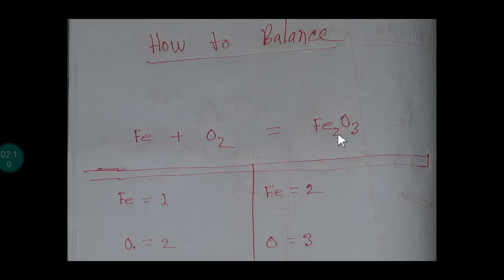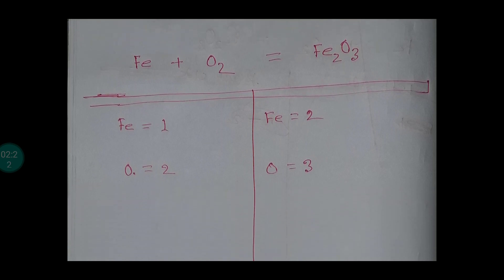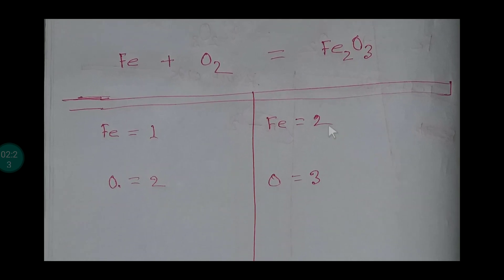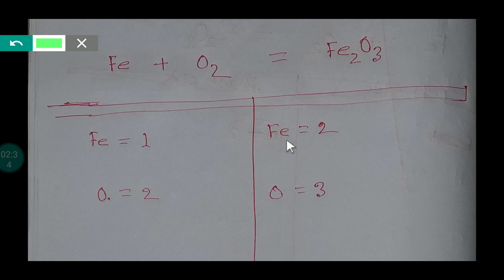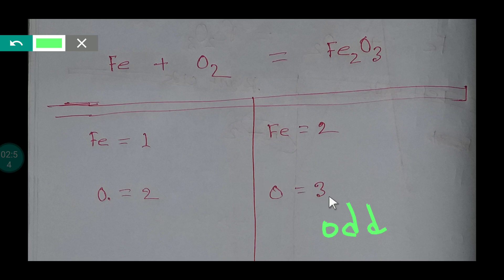Now our target is to balance this reaction: Fe + O₂ → Fe₂O₃. On the left side, the number of iron is 1 and on the right side it is 2. On the left side the number of oxygen is 2, and on the right side it is 3. We have an odd number of oxygen on the right side.